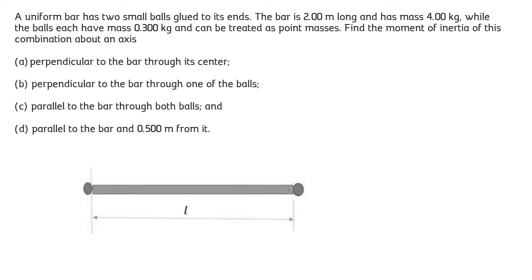The moment of inertia is a measure of how resistant an object is to change in its rotational motion. For a point mass at a distance r from its center, let's suppose this is the mass m and its distance from the axis is r. So we can write the moment of inertia of this ball of mass m as mr square.